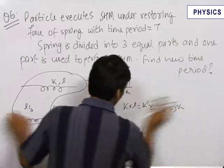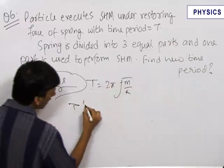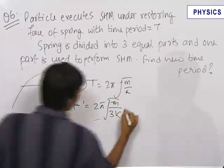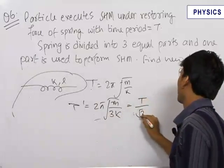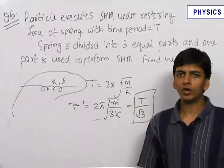Now, this spring with spring constant 3k is used to perform SHM. Therefore, the new time period T' = 2π√(m/3k) = T/√3. So the time period of the new SHM comes out to be T/√3.